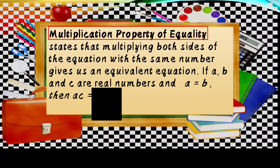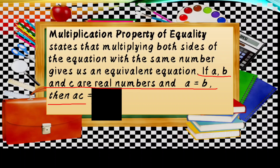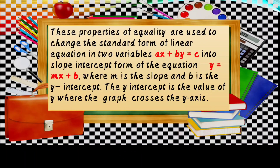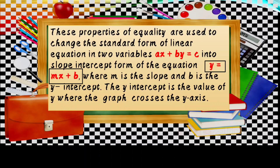The Multiplication Property of Equality states that multiplying both sides of the equation with the same number gives us an equivalent equation. If A, B, and C are real numbers and A equals B, then AC equals BC, and A over C equals B over C. These properties of equality are used to change the standard form of a linear equation AX plus BY equals C into the slope-intercept form Y equals MX plus B, where M is the slope and B is the Y-intercept. The Y-intercept is the value of Y where the graph crosses the Y-axis.